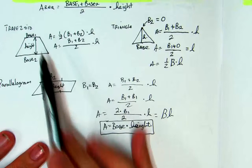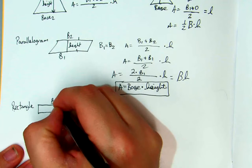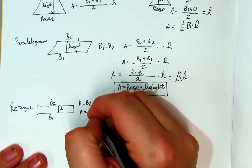Rectangle, same thing. There's base 1, there's base 2, there's the height. Base 1 equals base 2. It's the exact same thing that happens up here.